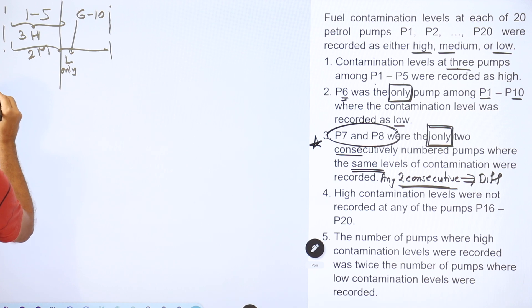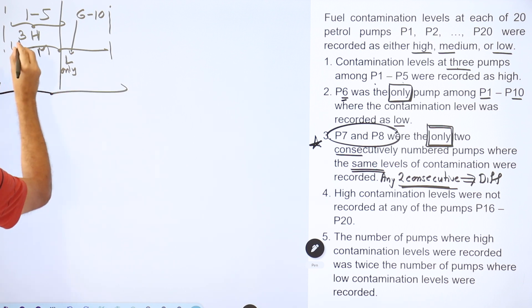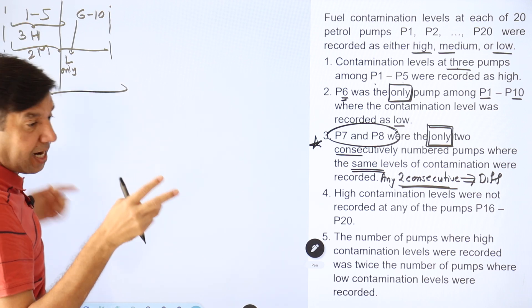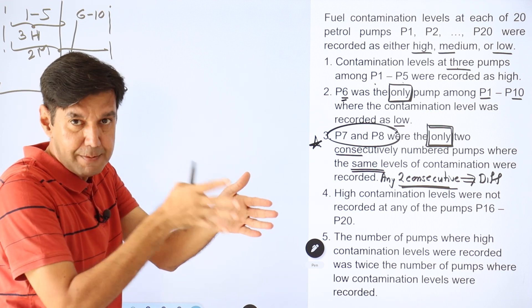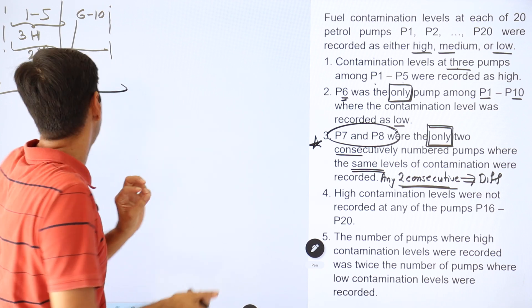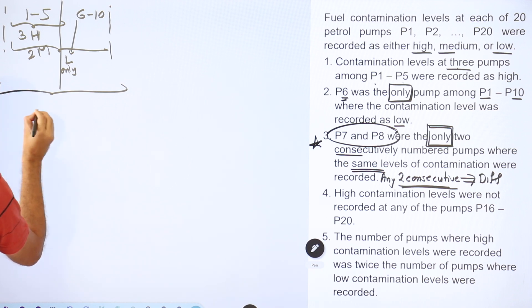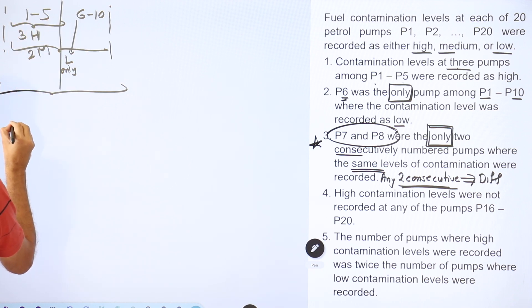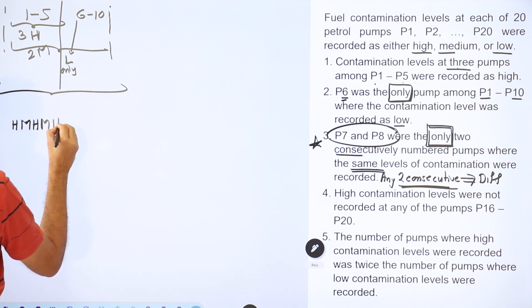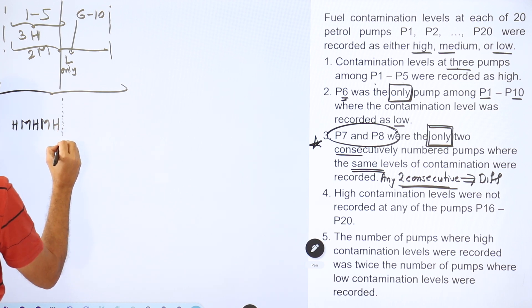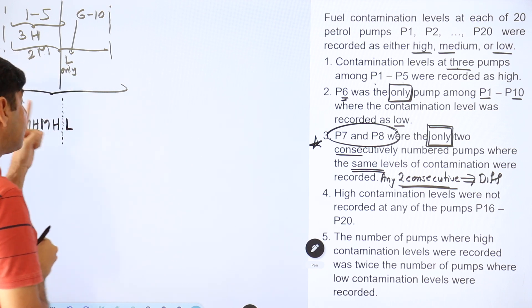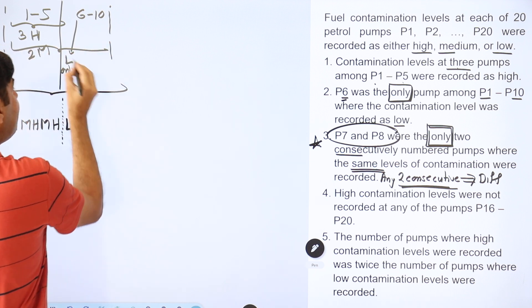Since H cannot be together and out of five blocks three of them are H, no two H's can be adjacent. So it has to be the 1st, 3rd, and 5th positions. The first block of five is: High, Medium, High, Medium, High. I'll just put a marker for positions 1, 2, and 5. Then I know P6 is definitely Low.